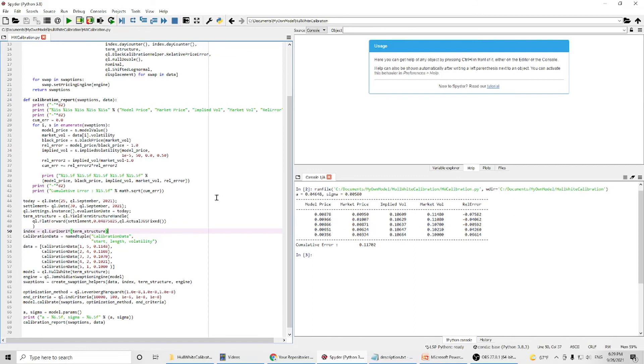We can see the final result gives us a and sigma, and also gives us cumulative error of 0.11702. We can compare the model price and the market price, the implied volatility and market volatility.